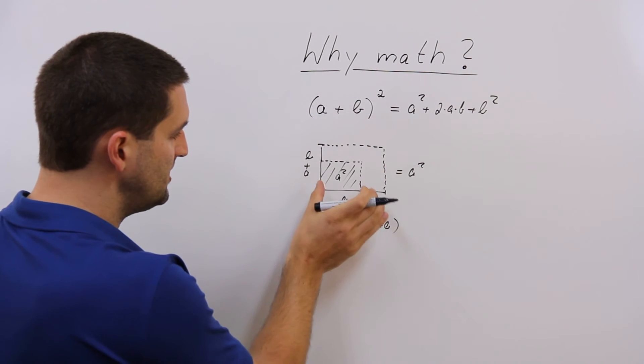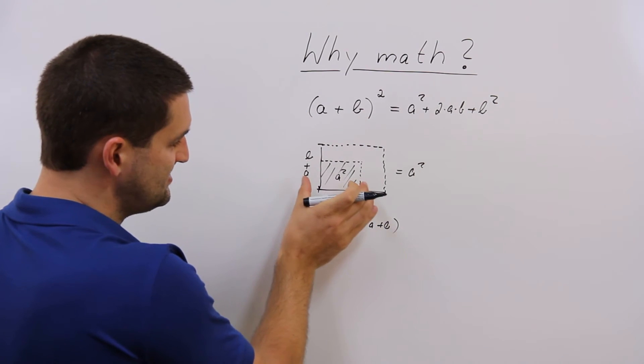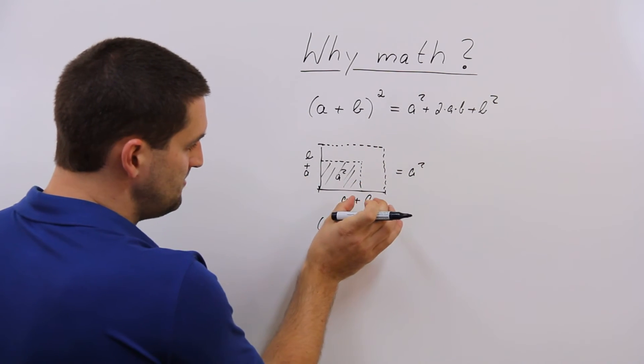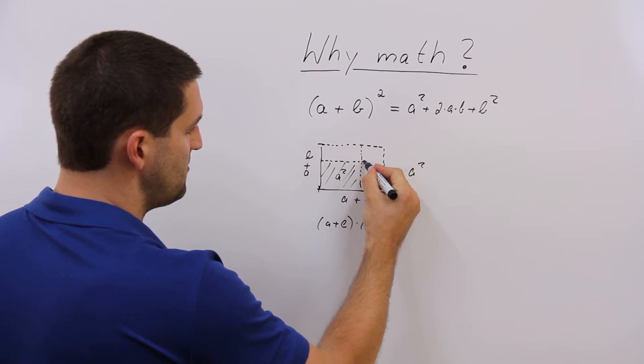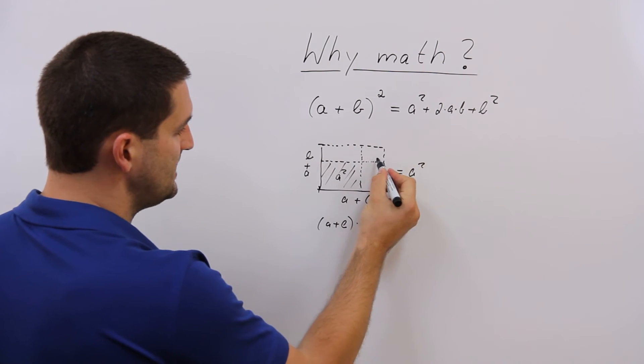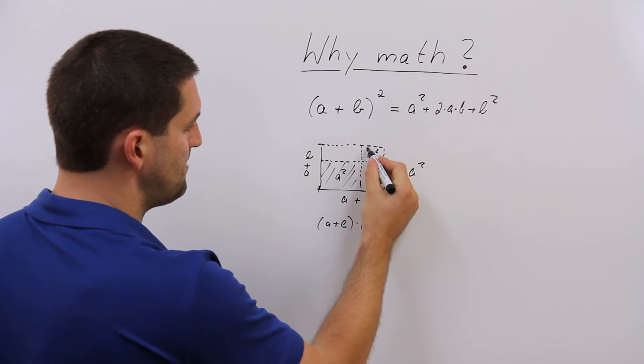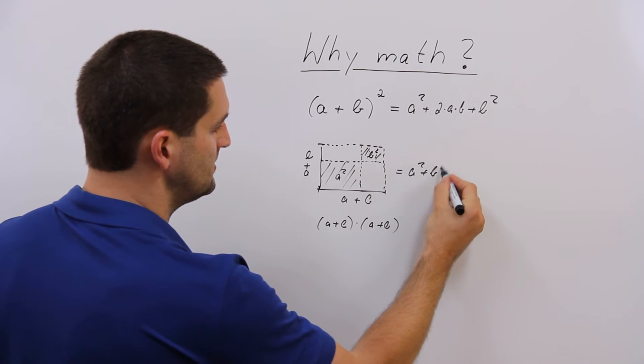Now you see the formula, what it is about. A little bit tricky now, but I hope you see it. b and b is this area in this corner right here. It's b².